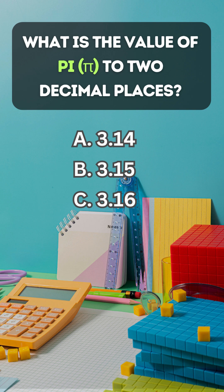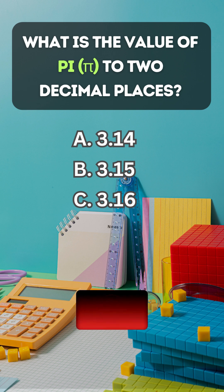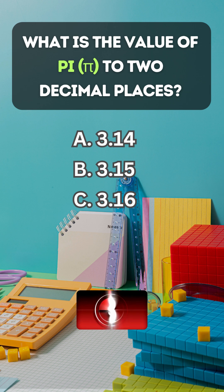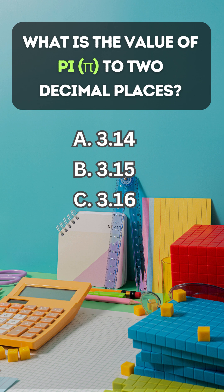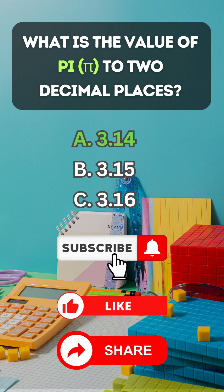What is the value of pi to two decimal places? Answer A. 3.14.